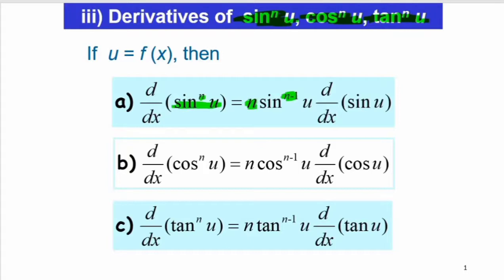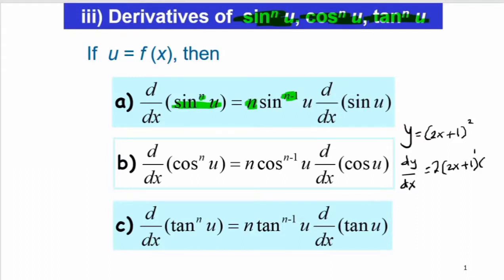For example, which you had learned earlier: when we have the function y equals (2x + 1)², then dy/dx equals 2·(2x + 1)¹, and then we differentiate inside the bracket. We get 2, so the answer is 4·(2x + 1).